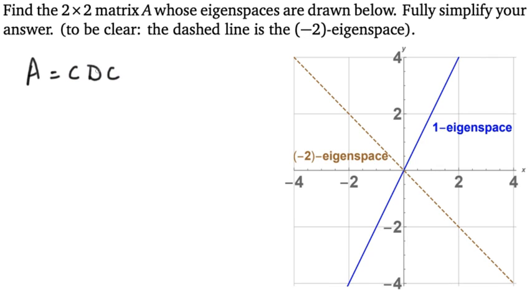CDC^(-1), right? And then we can come up with these matrices C and D, and then we can compute C inverse and multiply them together and we'll get A. So that's the clever part. I would have never thought to use the fact that A is diagonalizable.